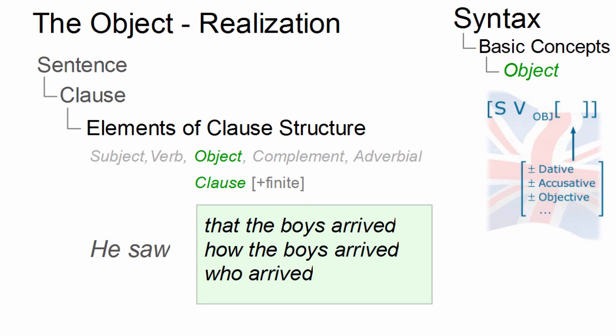Alternatively, objects can be realized by a finite clause, for example, by a nominal that clause, a WH interrogative clause, or a nominal relative clause.